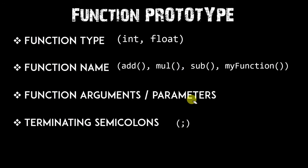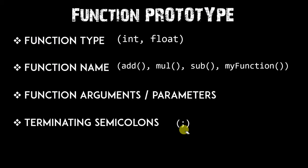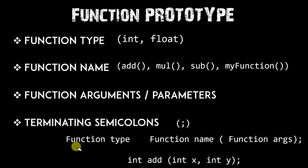The function argument depends on the user — how many arguments you need inside a function: two, four, five, six, as many as you want. The terminating semicolon is used at the end of the function prototype to terminate it. The syntax is: function type, then function name, then function arguments, terminated by a semicolon.